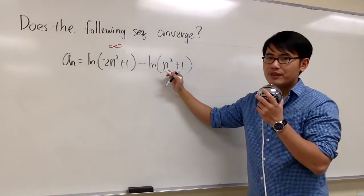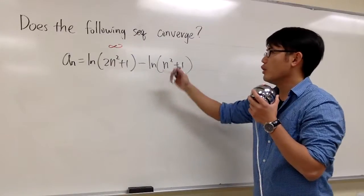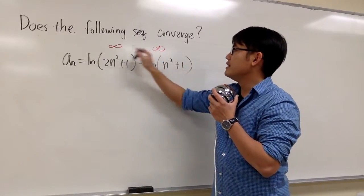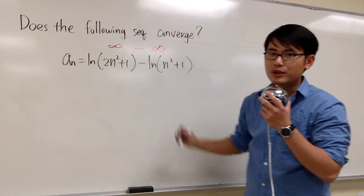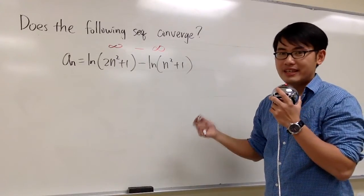Likewise, if you have n goes to infinity right here, you will have infinity inside. ln of infinity is also infinity. But then, this is infinity minus infinity situation. Congratulations, we have to do more work because we cannot draw any conclusion yet.